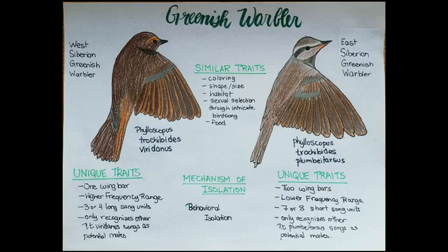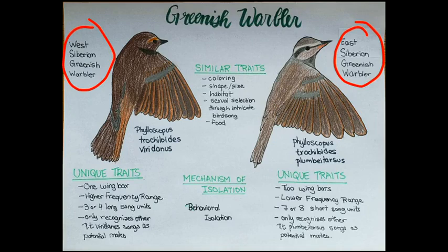Hello everyone, today I will be talking about the greenish warbler and its subspecies. The two subspecies are the West Siberian greenish warbler and the East Siberian greenish warbler. Their scientific names are Phylloscopus trachyloides vireonidus and Phylloscopus trachyloides plumbeitarsus.